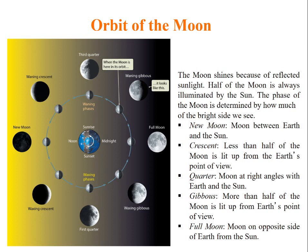The Moon shines because of reflected sunlight. Half of the Moon is always illuminated by the Sun. The phase of the Moon is determined by how much of the bright side we see.